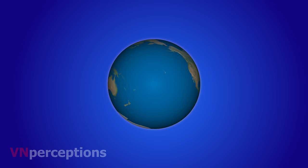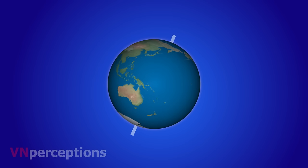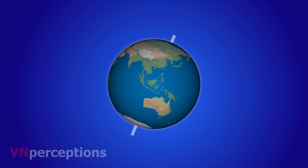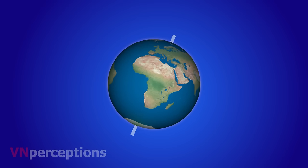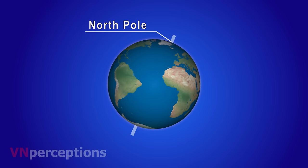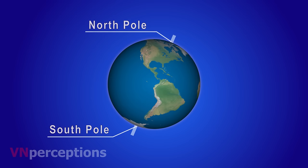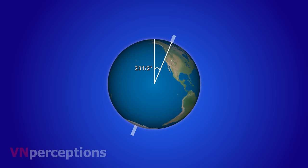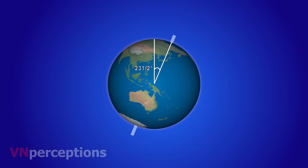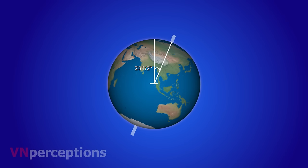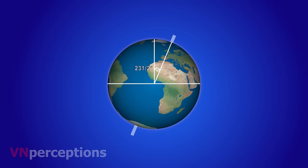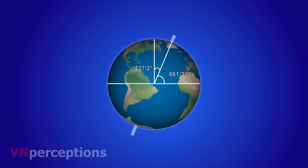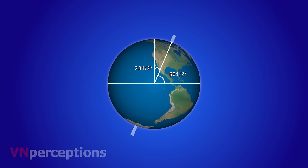The axis of the earth is an imaginary line passing through the center of the earth, as it does on the globe. The two endpoints through which the axis passes are known as the north pole and south pole. The axis is tilted at an angle of 23 and a half degrees from the vertical. This means that if a line were drawn parallel to the plane of the earth's orbit, the earth would make an angle of 66 and a half degrees to this line.